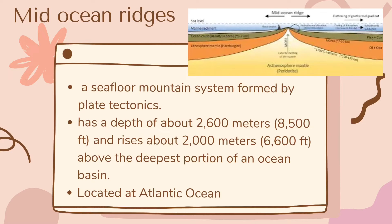Mid-ocean ridges are a seafloor mountain system formed by plate tectonics. They have a depth of about 2,600 meters (equivalent to 8,500 feet) and rise about 2,000 meters (equivalent to 6,600 feet) above the deepest portion of an ocean basin. They are located in the Atlantic Ocean. Mid-ocean ridges are geologically important because they occur along the kind of plate boundary where new ocean floor is created as the plates spread apart, along the divergent plate boundary.